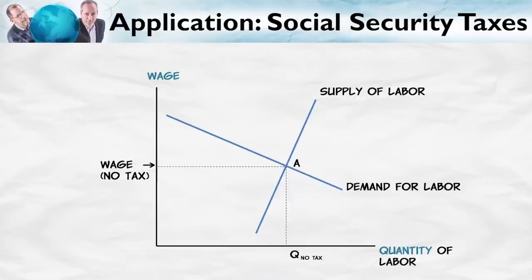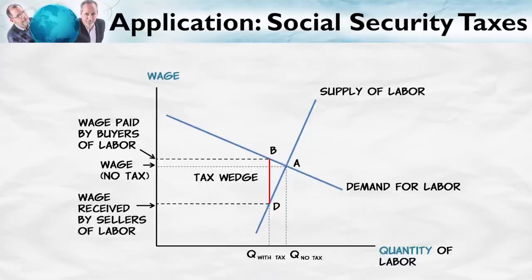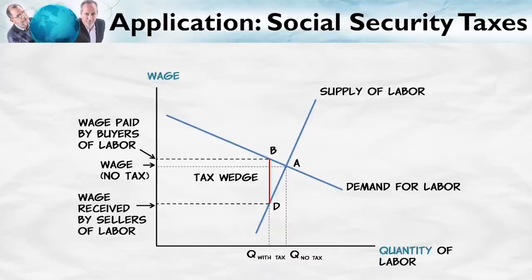Economists have done studies of this, and on average this is what they find. So think about your FICA taxes — that's a tax on labor. The wage paid by buyers of labor, that is the firms, goes up only a little bit. On the other hand, the wage received by the suppliers of labor — the workers — goes down by a lot. This makes perfect sense with a very inelastic supply of labor: the laborers can't escape the tax, and therefore they end up bearing most of the burden. This doesn't mean we shouldn't have Social Security taxes — it may be a good way of forcing people to save for their own future. But it does mean it is not a free lunch for the workers. Workers' wages will drop because of the tax. If we didn't have the Social Security tax, wages for most workers would, in fact, be higher.